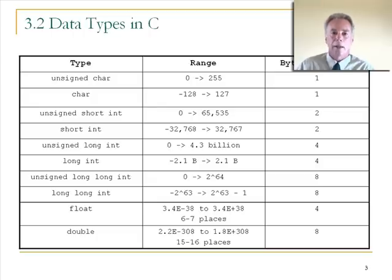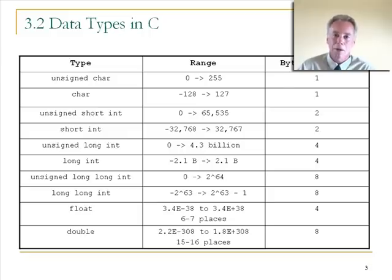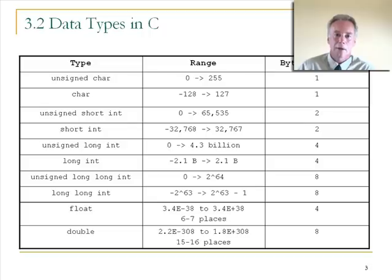More recently, an eight-byte integer data type was added called long long int, which can store values from -2^63 to +2^63 — very large integers. Some modern C compilers also have a double double, a 16-byte floating point value, but the Microsoft C compiler doesn't support it — declaring double double gives you the same result as a regular double. You don't need to memorize all these values, but keep a reference handy and understand the differences between them.